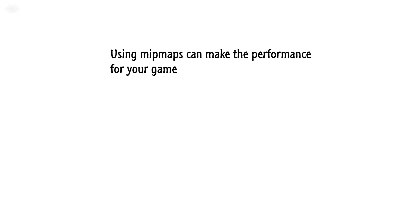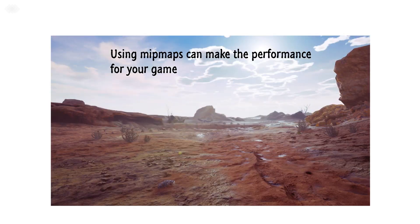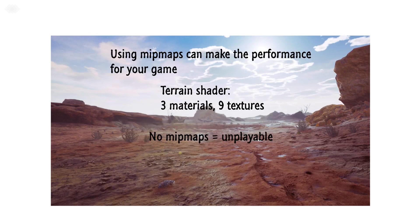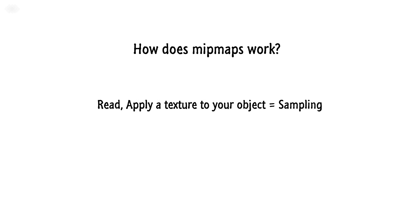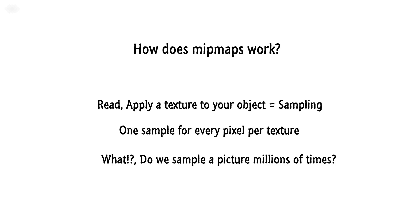Though mipmaps increase memory, they can make or break the performance of your game. If you have a terrain that blends three materials, that's nine textures — normal, albedo, material mask — and without mipmaps this could half your frame rate. When you want a texture on your object, you need to read it and then apply it — simplified, this is called sampling, and it is normally done in the pixel shader. So for each pixel on the screen we sample that texture. Yes, we sample a texture a million times, so it needs to be as fast as possible.